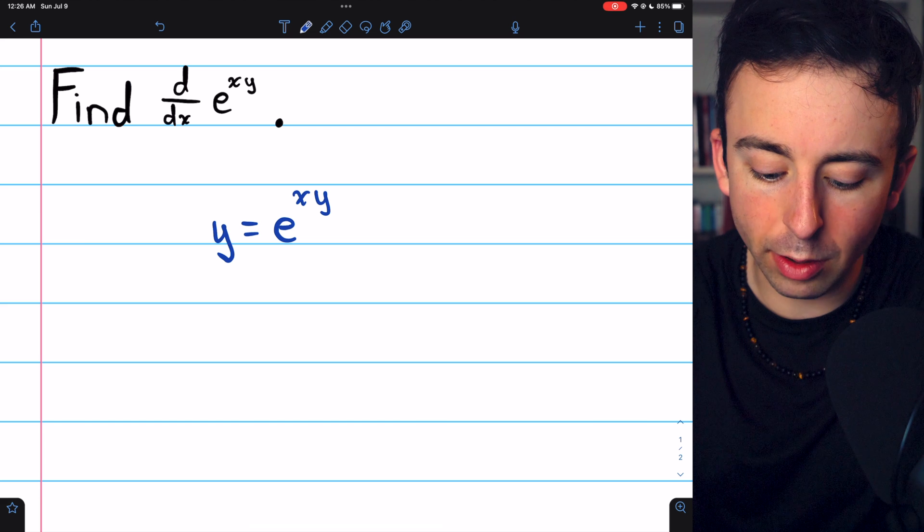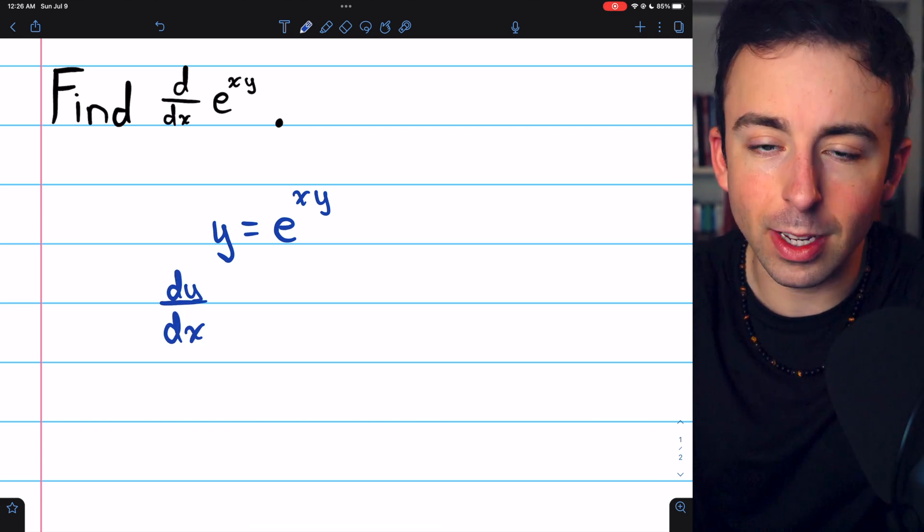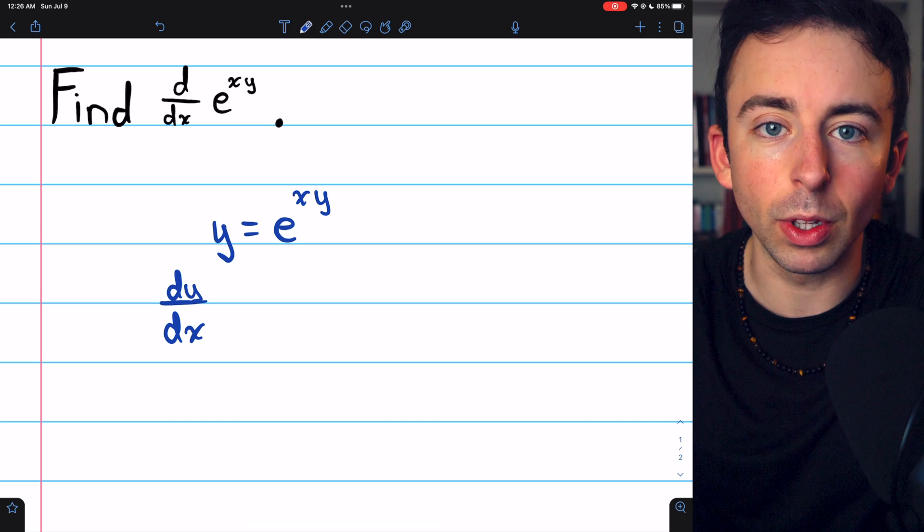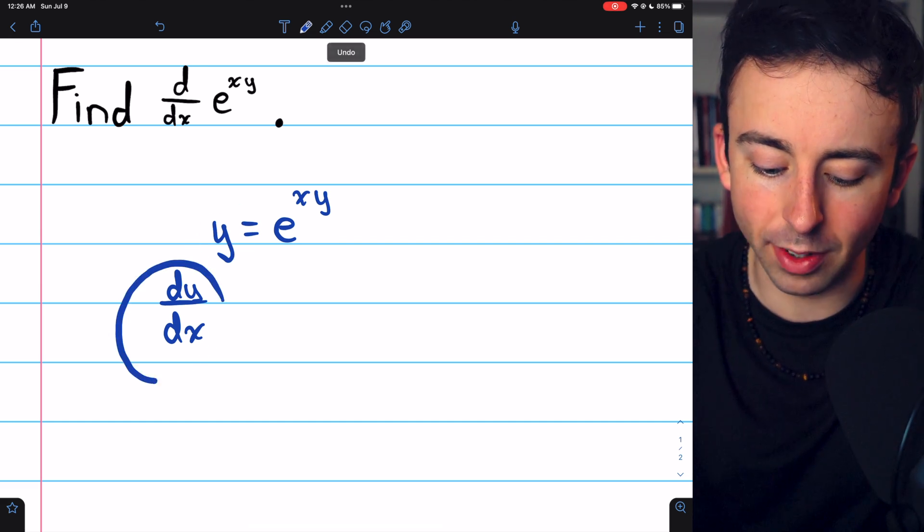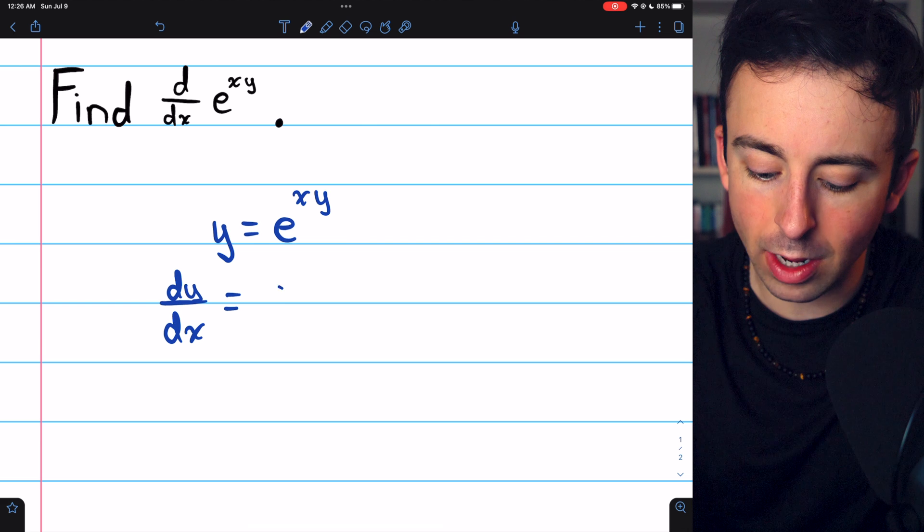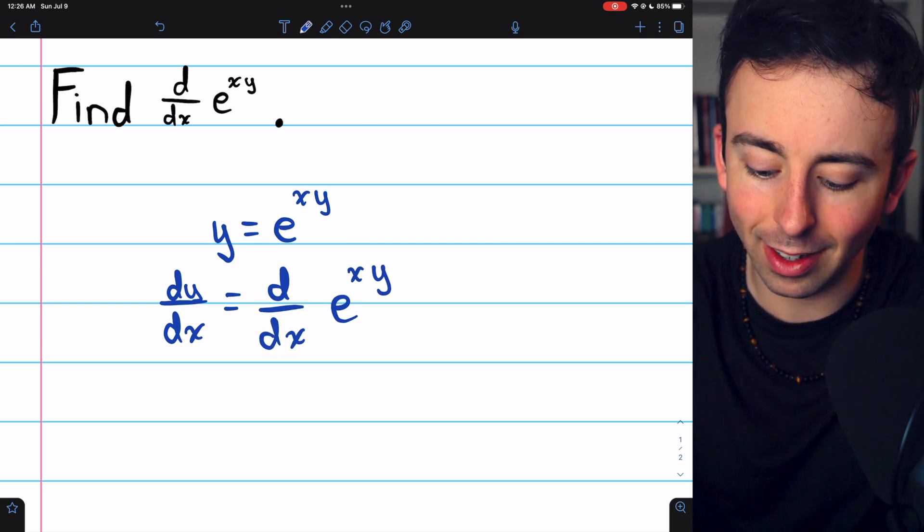Then what we're trying to do is find dy dx. So let's take the derivative of both sides with respect to x. If we take the derivative on the left, we'll have dy dx. On the right, we'll have the derivative of e to the xy with respect to x.